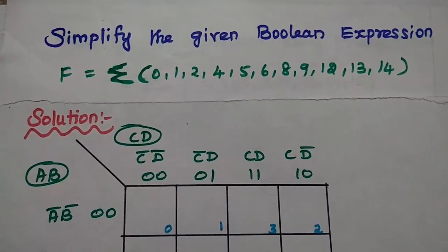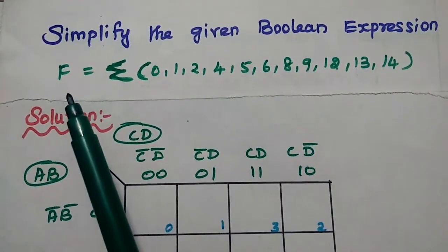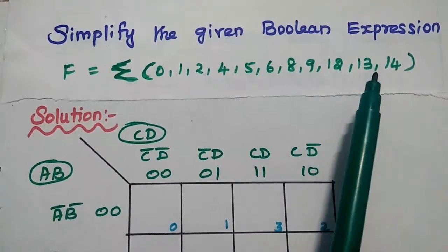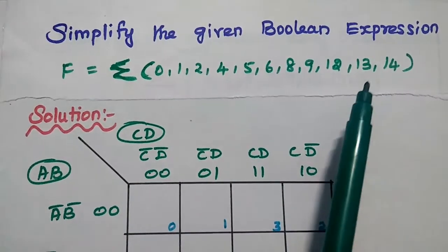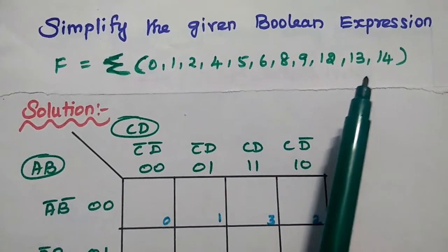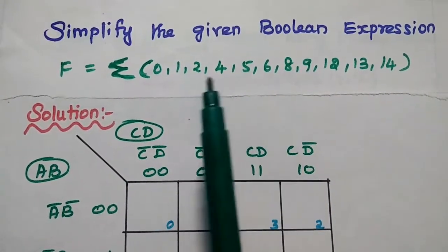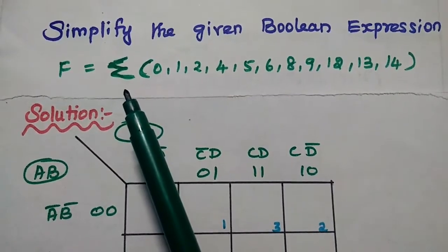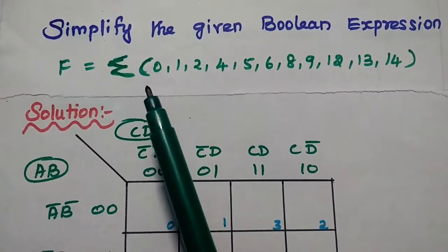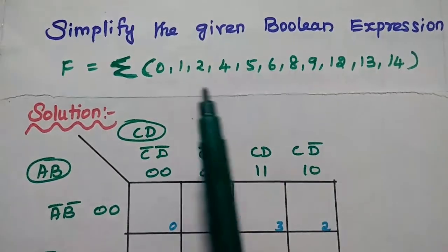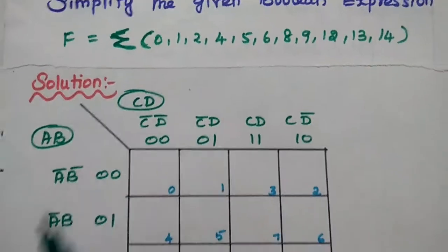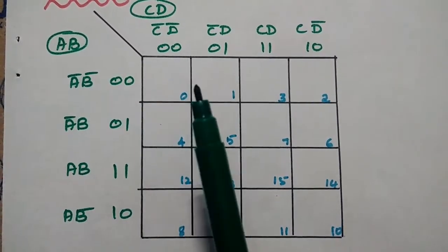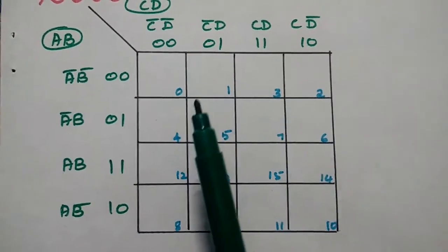The next problem is to simplify the given Boolean expression. The Boolean function F equals the summation of minterms 0, 1, 2, 4, 5, 6, 8, 9, 12, 13, and 14. In the previous examples, problems were given directly with variables, but here the expression is given in terms of minterms. Summation represents sum of products — SOP. We need to plot a KMAP for 4 variables: A, B, C, and D.